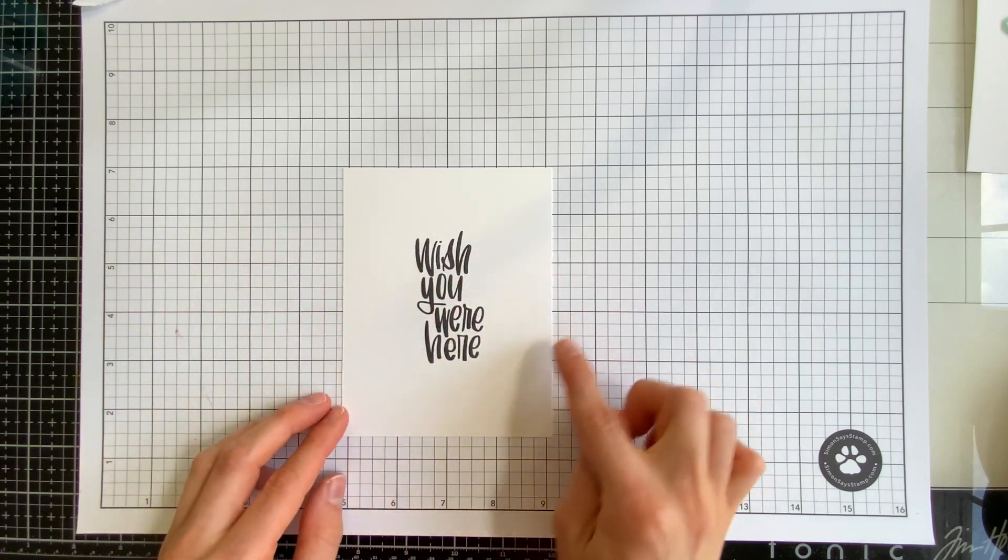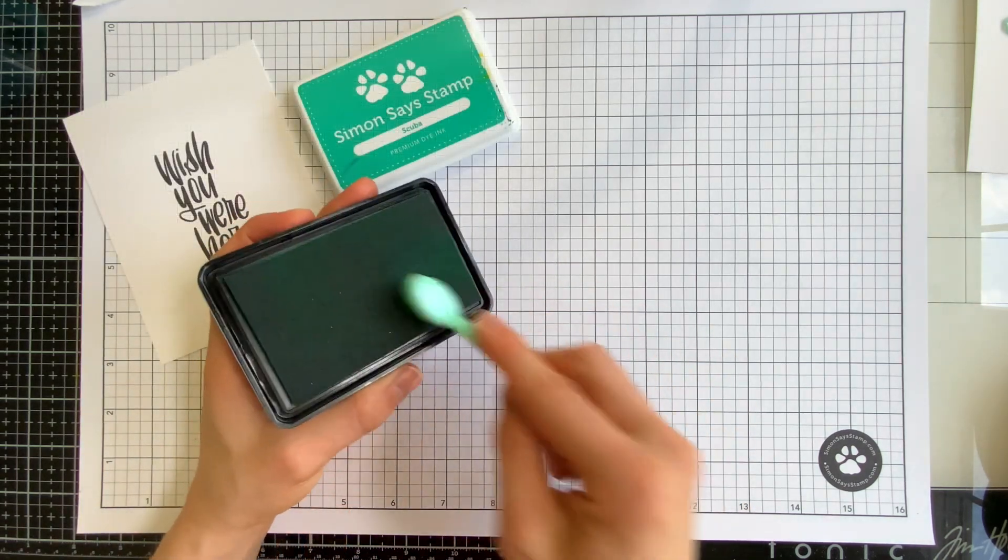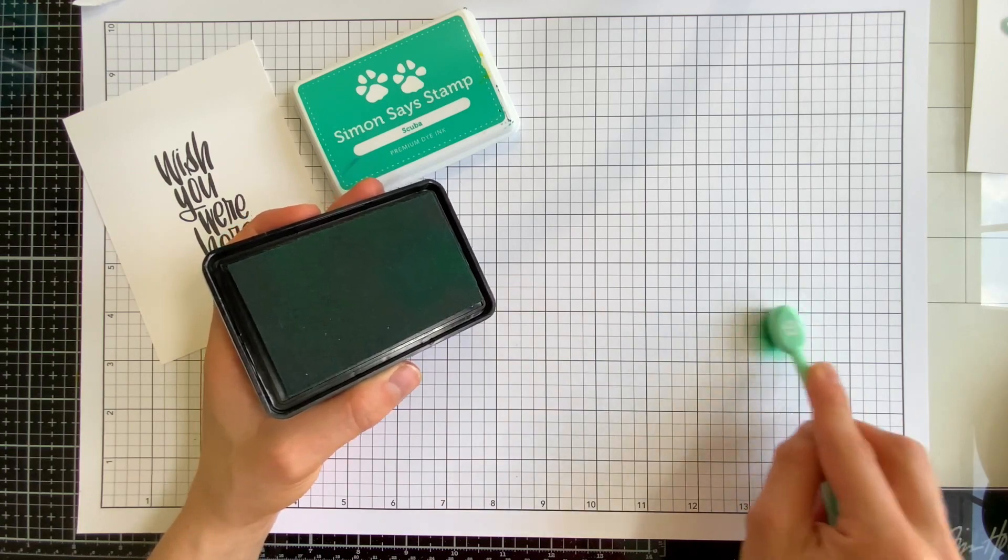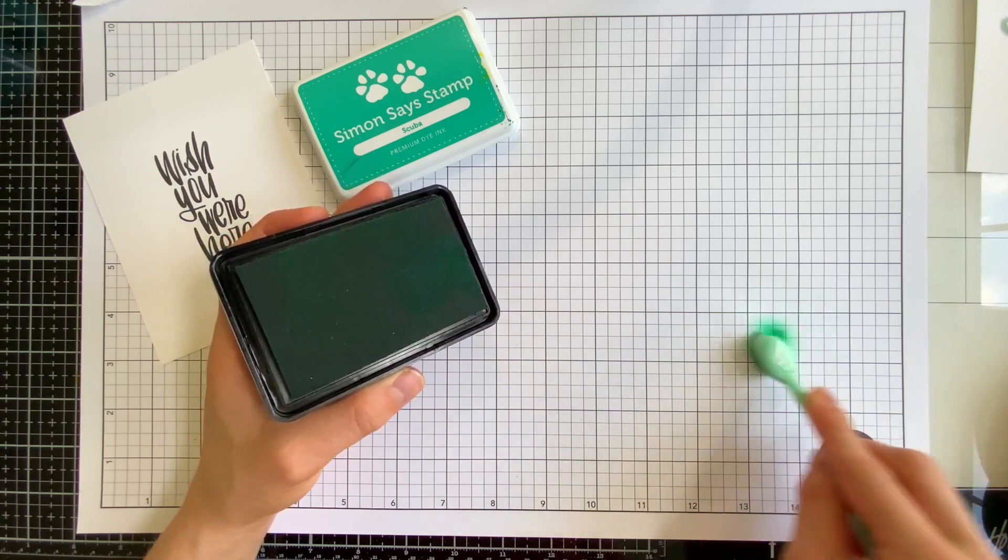This grid pad is the perfect background for stamping and assembling your projects since the grid lines will help you make sure everything is lined up perfectly. The bright white color is also very handy for testing out ink or marker colors before putting them on your project.